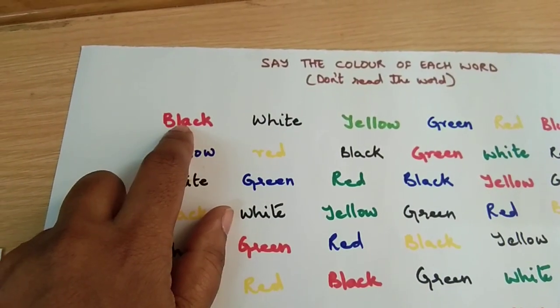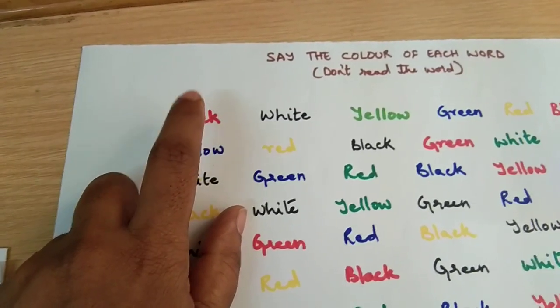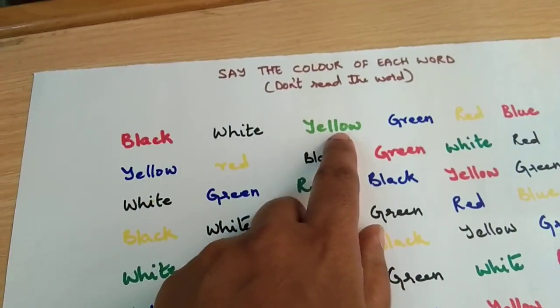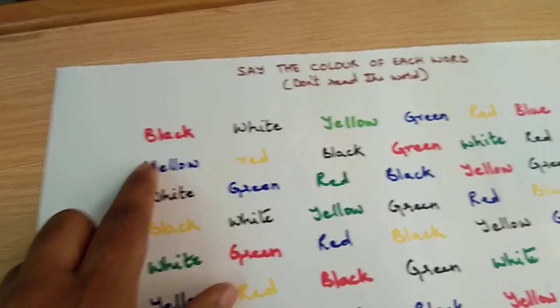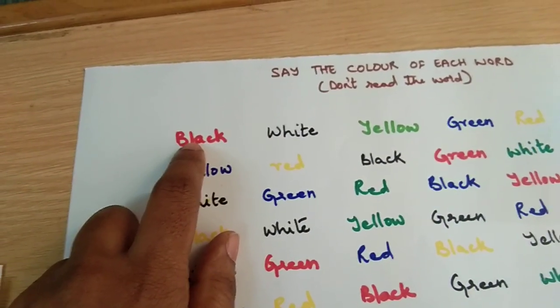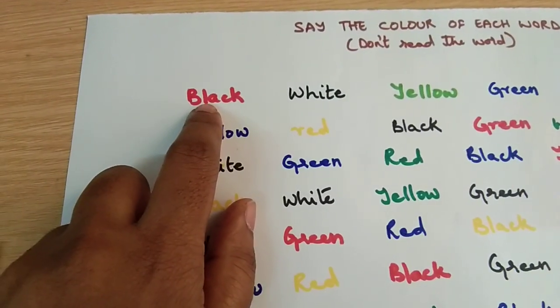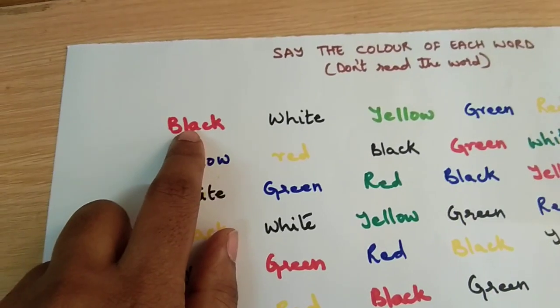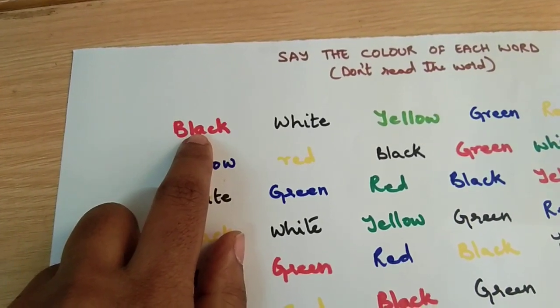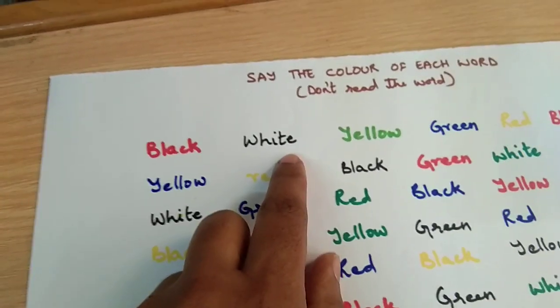It is easy to say what is written here, black, white, yellow, that's easy to say. But the game is he has to read the color, not what is written. This is black, white...